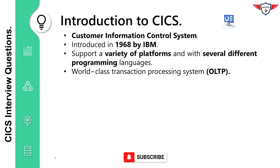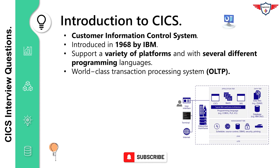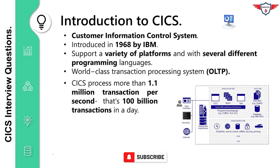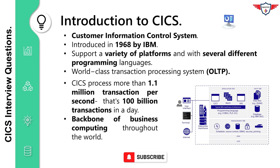CICS is a world-class transaction processing system. As such, it can handle billions of online transactions every day for banks, airlines, insurance companies, hospitals, and e-business sites. CICS processes more than 1.1 million transactions per second — that's 100 billion transactions in a day. CICS is probably the most successful piece of software of all time. It is the backbone of business computing throughout the world. Millions of users unknowingly activate CICS every day.